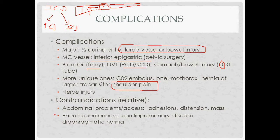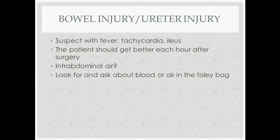Contraindications to laparoscopic procedures are relative, and judgment is used. Two categories: things that make abdominal access difficult (adhesions, distension, or a mass) and things that make pneumoperitoneum dangerous (cardiopulmonary disease, diaphragmatic hernia, or shunts such as a VP shunt draining into the abdomen — increased abdominal pressure would impair shunt drainage).